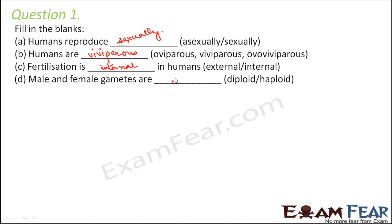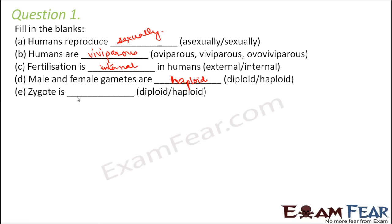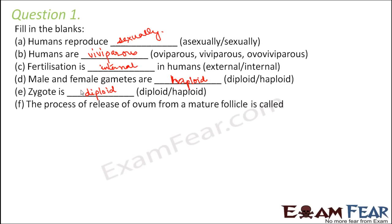All other cells of the human body — that is, all somatic cells — are diploid, except the sex cells, which are haploid. So when these two fuse together they form a diploid zygote. Is the zygote diploid or haploid? When the male and female gametes fuse, they form a diploid zygote.